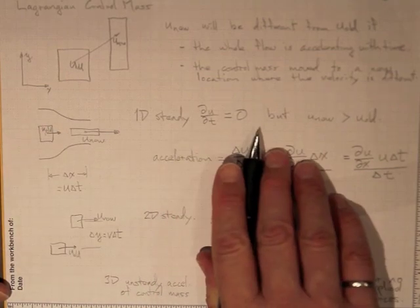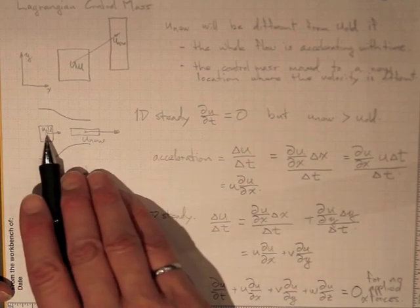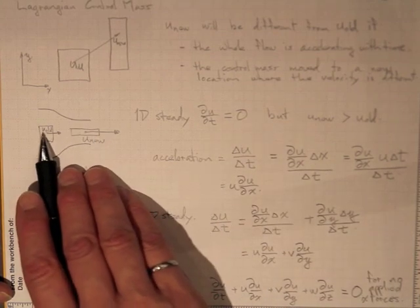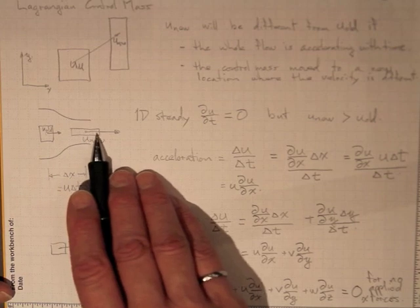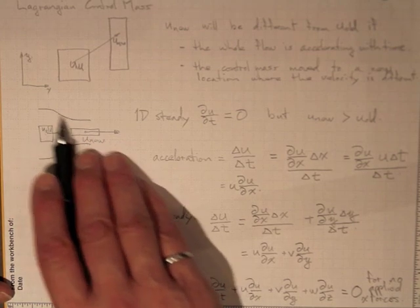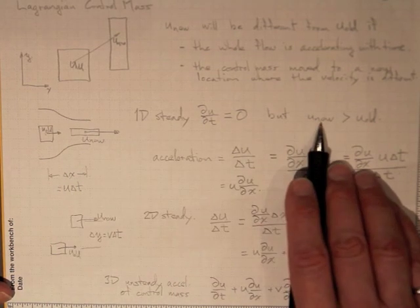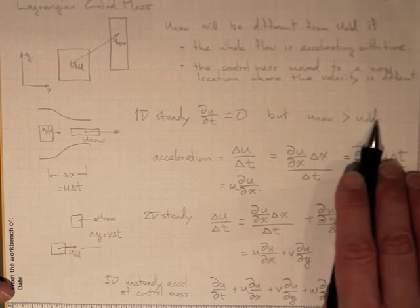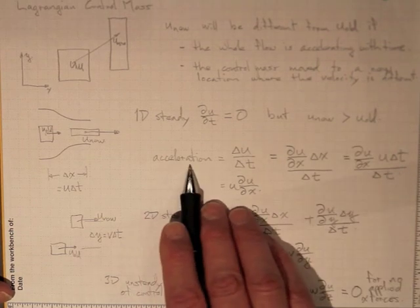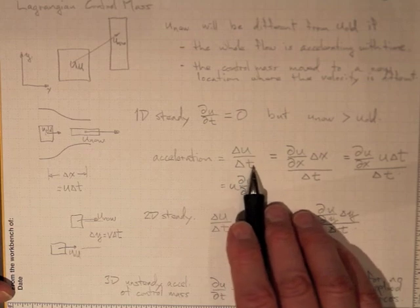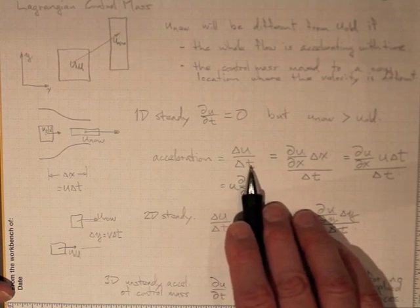But we're going to assume that's steady. The fluid may still be accelerating because it's moving from a region of low velocity to a region of high velocity like it is in this one-dimensional nozzle. So the new velocity is greater than the old velocity. The acceleration will be the change in velocity divided by the time it took to change.